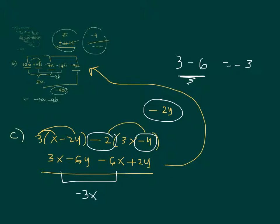What about negative 6y plus 2y? That gives negative 4y. So that's how you combine the expressions. You distributed the numbers first, then combined like terms. You should always end by combining the like terms.